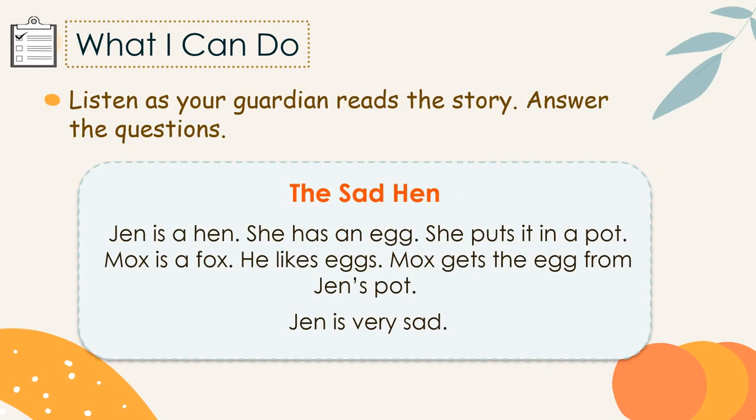Under 'What I Can,' listen as your guardian reads the story again and answer the questions. 'The Sad Hen.' Jen is a hen. She has an egg. She puts it in a pot. Mox is a fox. He likes eggs. Mox gets the egg from Jen's pot. Jen is very sad.